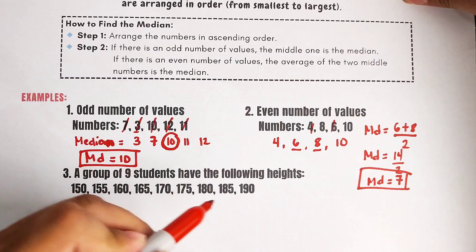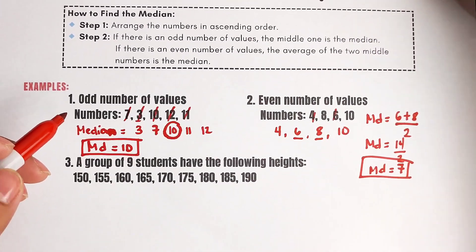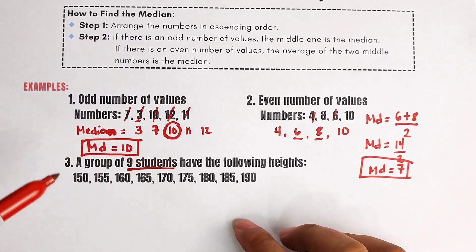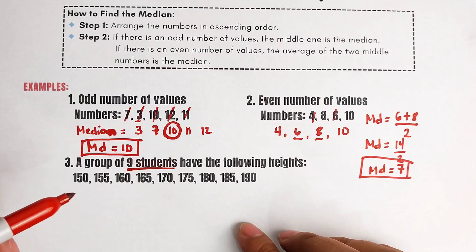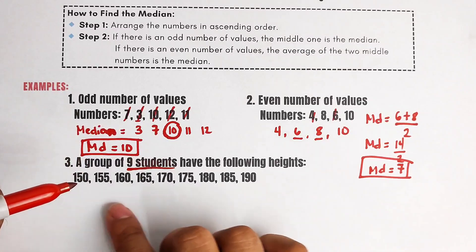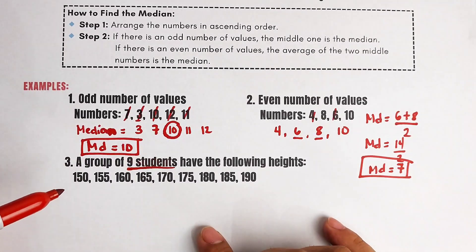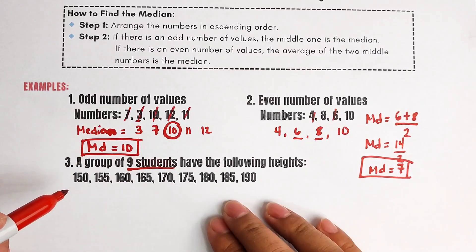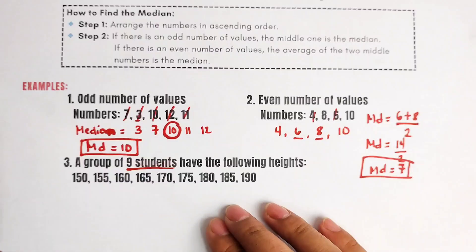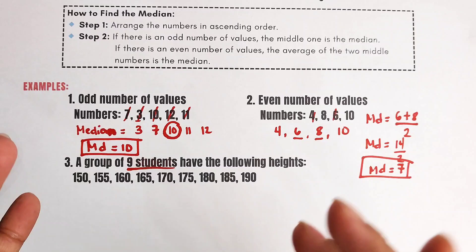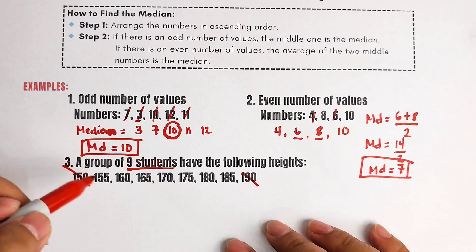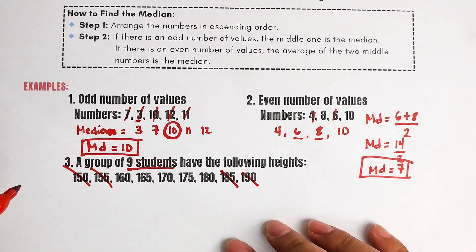It says here, a group of 9 students have the following heights. Based on the given problem, we have 9 students — this is an odd number of values. Let's list them out in ascending order from the smallest to the largest. If you observe, the numbers are already arranged in ascending order. Since we have 9 students, we find the middle number by eliminating the first and last, the second and second-to-last, and so on until we get to the middle number.